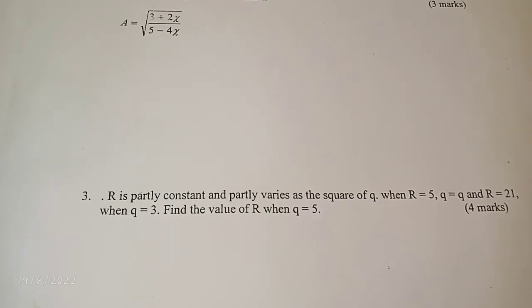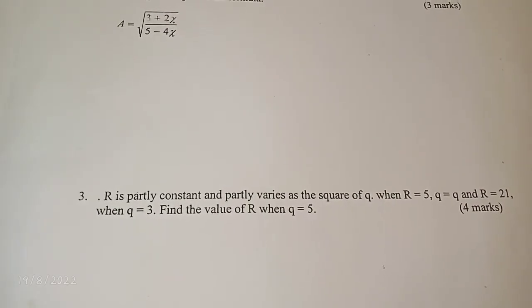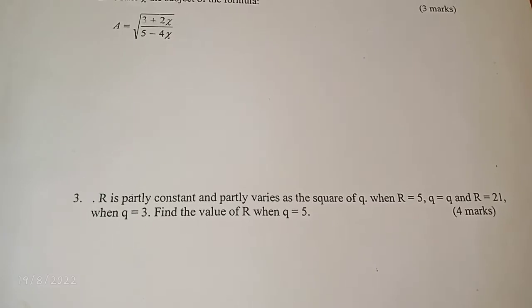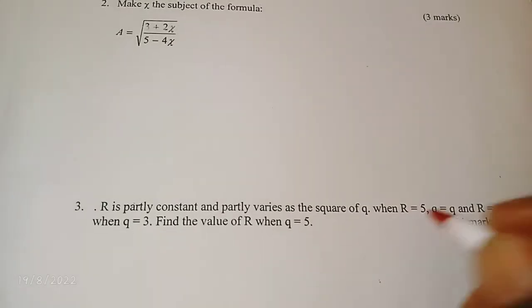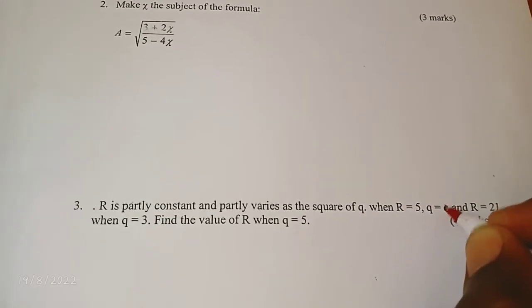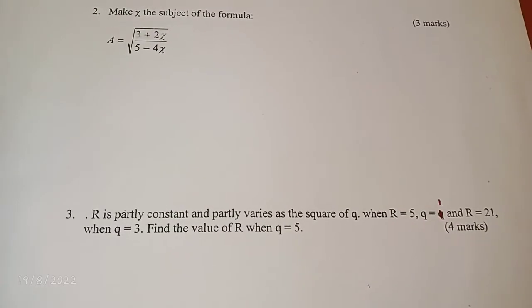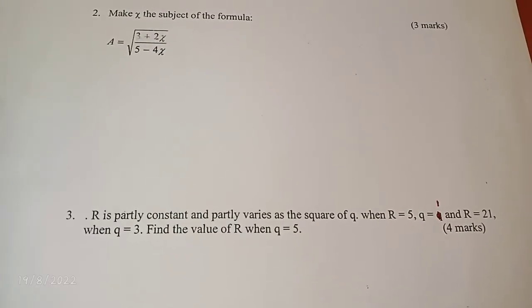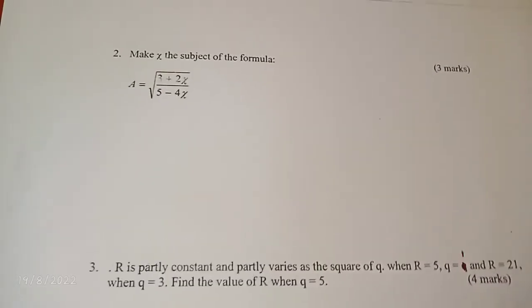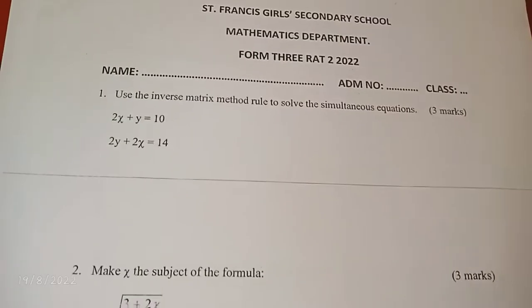And eventually we have R is partly constant and partly varies as the square of q. When r is 5, q equals 1, and r equals 21 when q is 3. Find the value of r when q is 5. So without further ado, let's get started.